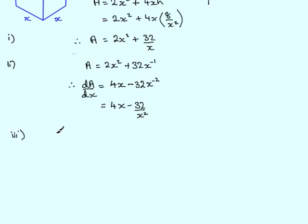So when dA by dx equals 0, we have essentially that 4x minus 32 over x squared equals 0. To solve this equation, it's best to multiply both sides by x squared. So 4x times x squared is 4x cubed, so we have 4x cubed. x squared times this term just gives us minus 32, and 0 times x squared is 0.